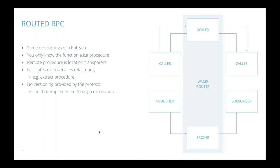The interesting thing about WAMP is routed RPC. The creators were very clever to realize that RPC can be analogous to pub/sub — the caller and the callee need not know each other. By reusing the pub/sub infrastructure they built an RPC architecture where you only know the function — the procedure as it's called in WAMP. I don't know who I'm calling, I don't know an IP address — I just know the function I want to call. The remote procedure is location-transparent, which facilitates microservice refactoring because I can extract a function from one service and move it into another and the caller will never know.